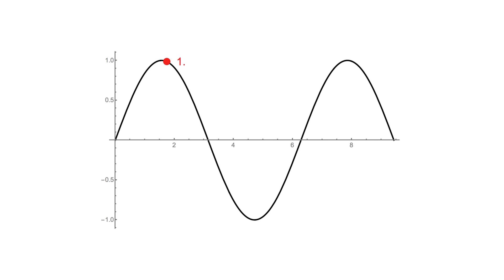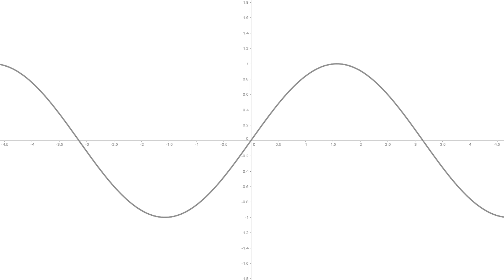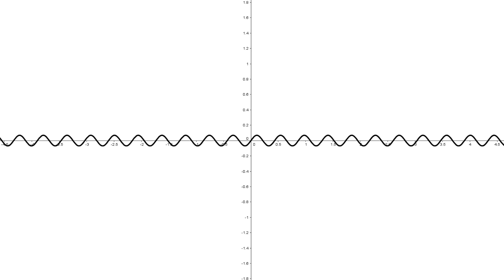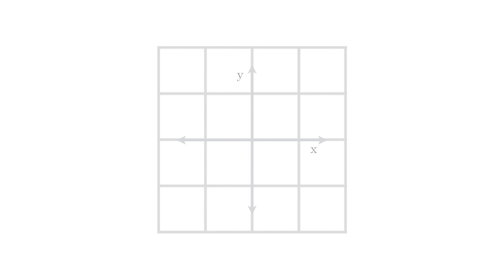We say that the function oscillates between 1 and minus 1. From the graph, it becomes clear that the function repeats itself. In fact, we can keep zooming out from the graph, and the sine wave will always repeat. To understand why this is happening, we have to look at how a sine wave is constructed.